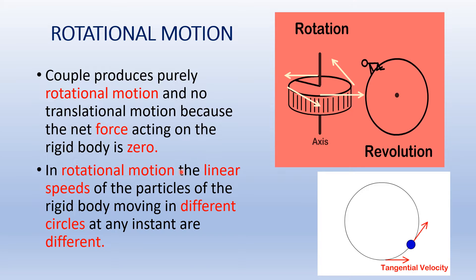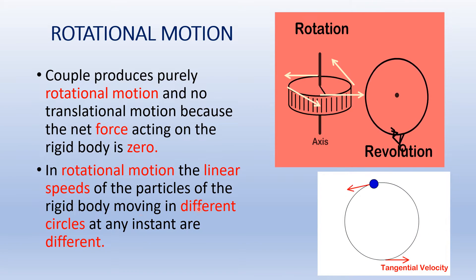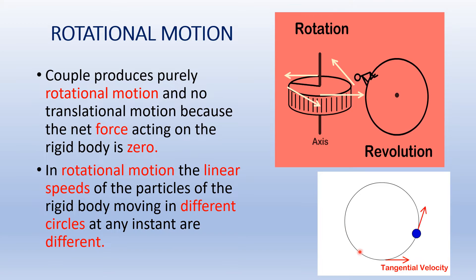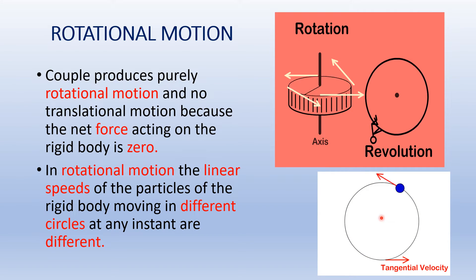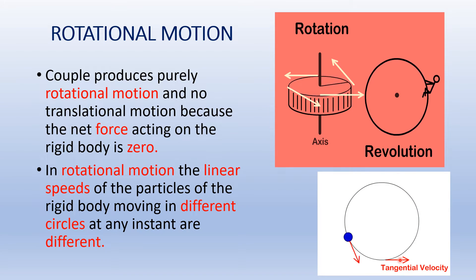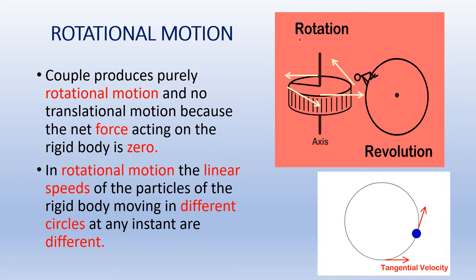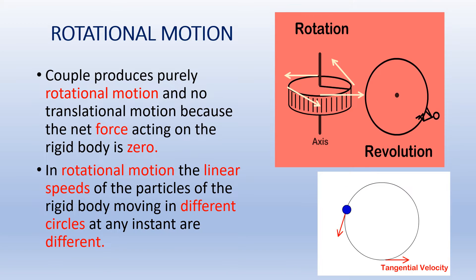In rotational motion, the linear speed of a particle of a rigid body moving in different circles at any instant are different. In this GIF, you can see that this object is rotating about an axis passing through the center, and the arrows show its tangential velocity, which is different at different positions of this rotating body. These arrows show the direction of the linear velocity at different points.